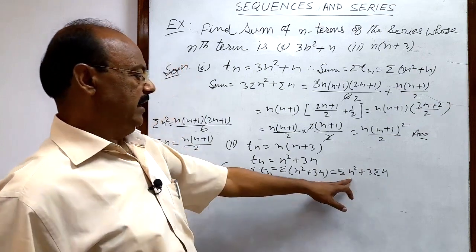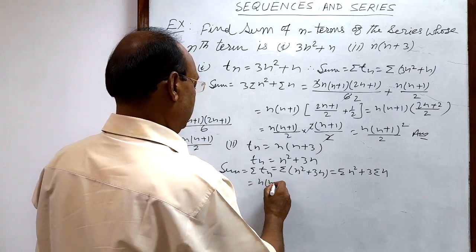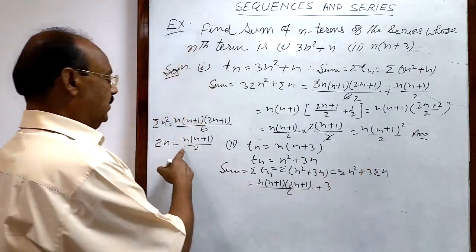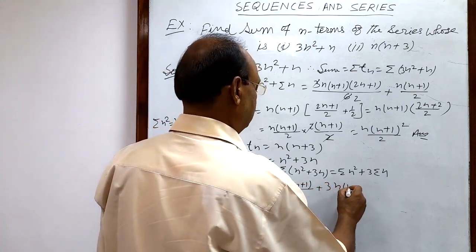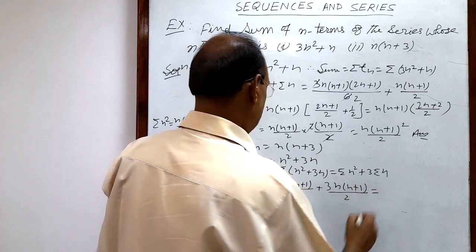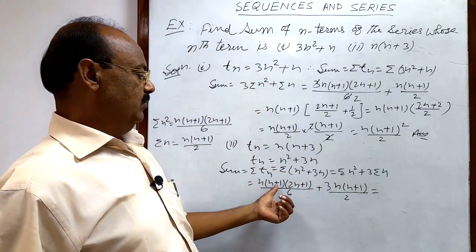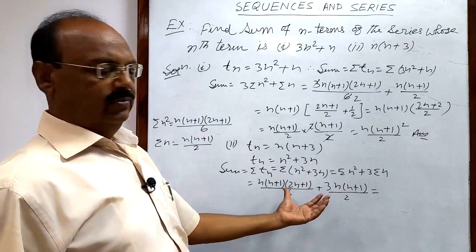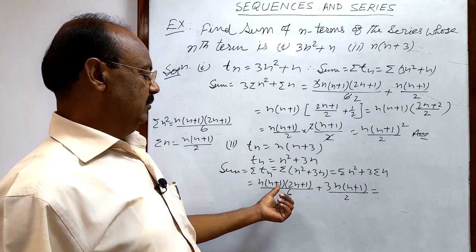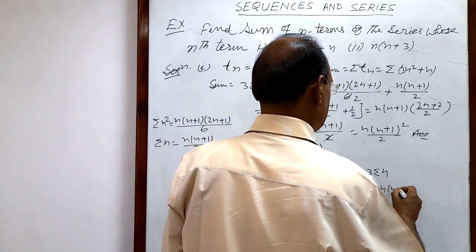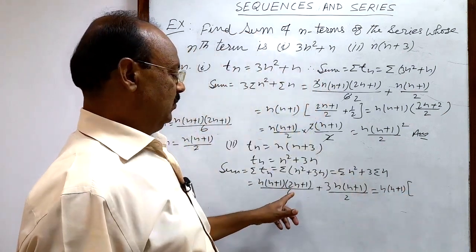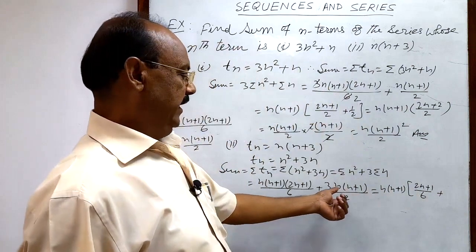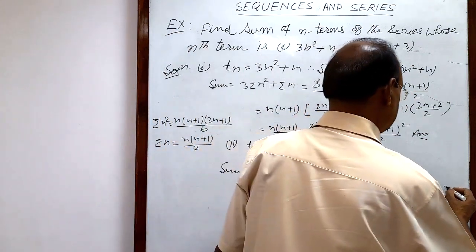Substituting the formulas: sigma(n²) = n(n+1)(2n+1)/6 and sigma(n) = n(n+1)/2. So the sum equals n(n+1)(2n+1)/6 + 3·n(n+1)/2. Taking n(n+1) as common from both terms, the remaining parts are (2n+1)/6 from the first term and 3/2 from the second term.